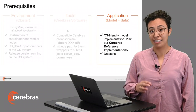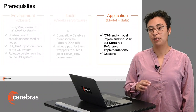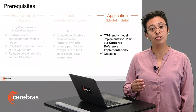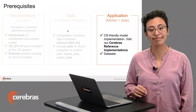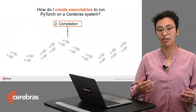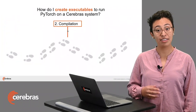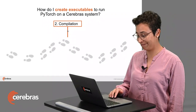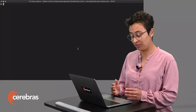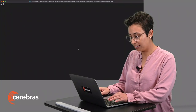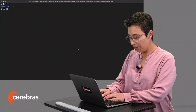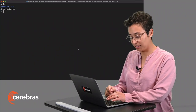For today's example, we are not going to require additional datasets — these will be downloaded during compilation. Now let's start compilation and create executables for the Cerebras system. I will show you in the terminal. In our Cerebras reference implementation of FCM MNIST, you will find two folders: PyTorch and TensorFlow. Today, we will work with PyTorch.